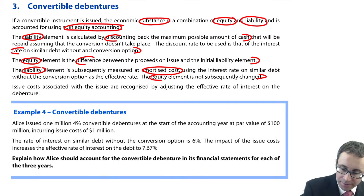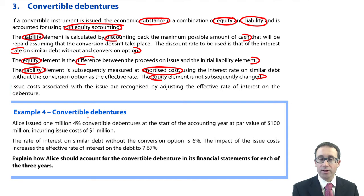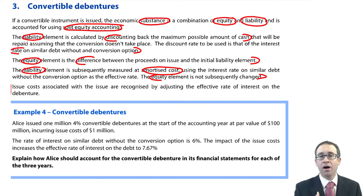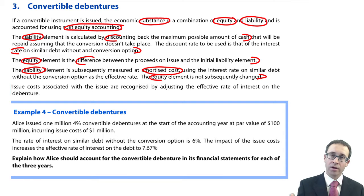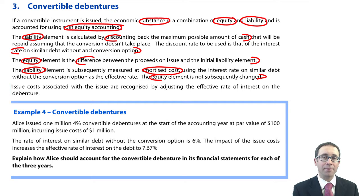A note on issue costs: issue costs associated with the issue are recognised by adjusting the effective rate of interest on the debenture. You'll be given an effective rate of interest without issue costs and with issue costs, and you use the effective rate with issue costs. When looking at the net proceeds, you need to account for those issue costs reducing your starting point. The best thing to do now is to work through an example.